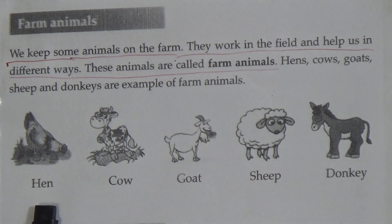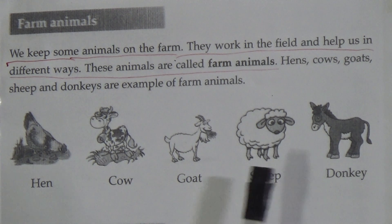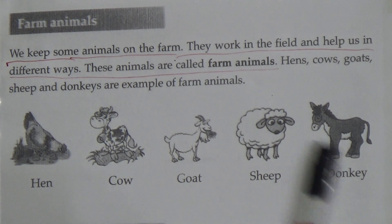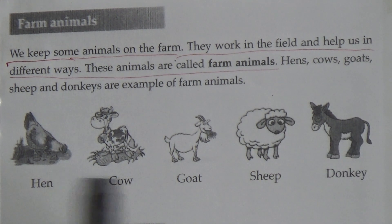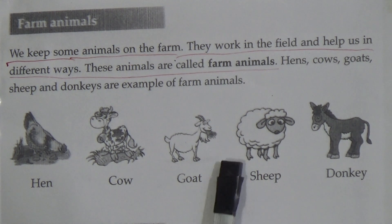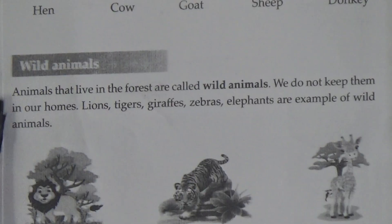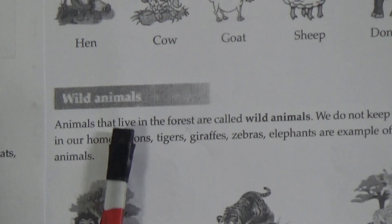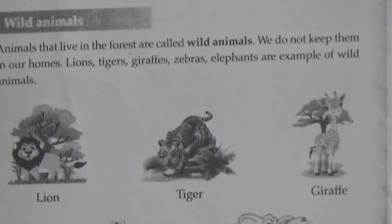Hens, cows, goats, sheep and donkeys are examples of farm animals. My dear students, see this figure — this one is a hen, this is a cow, this is a goat, sheep and donkey. All these animals are examples of farm animals.